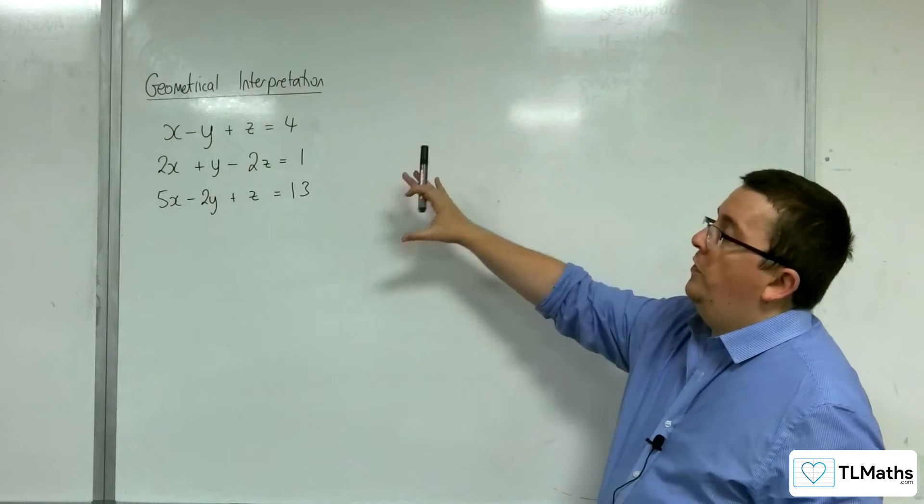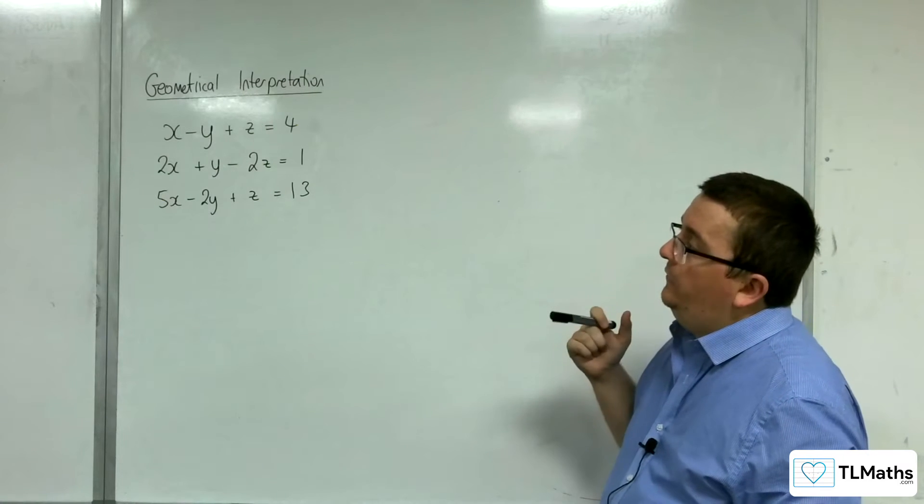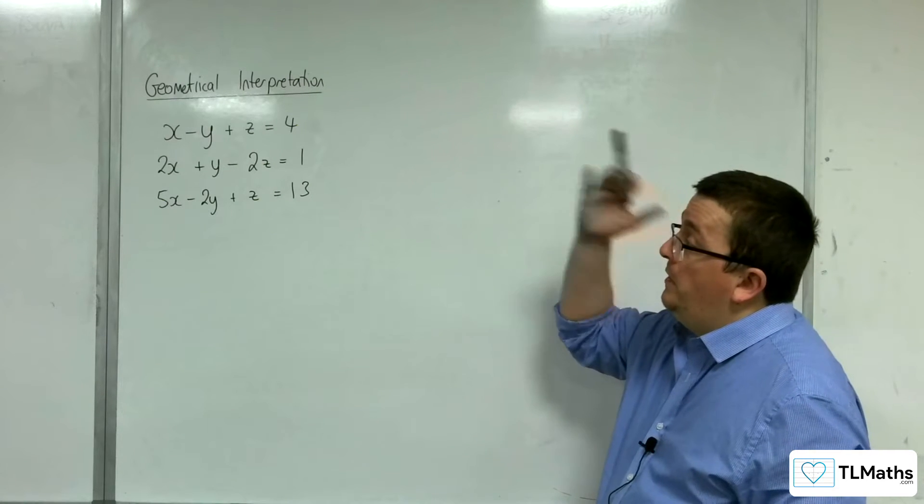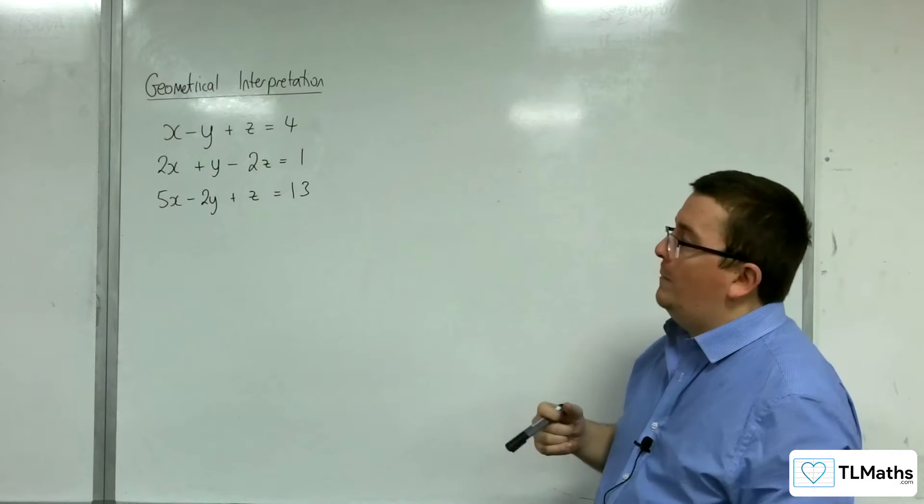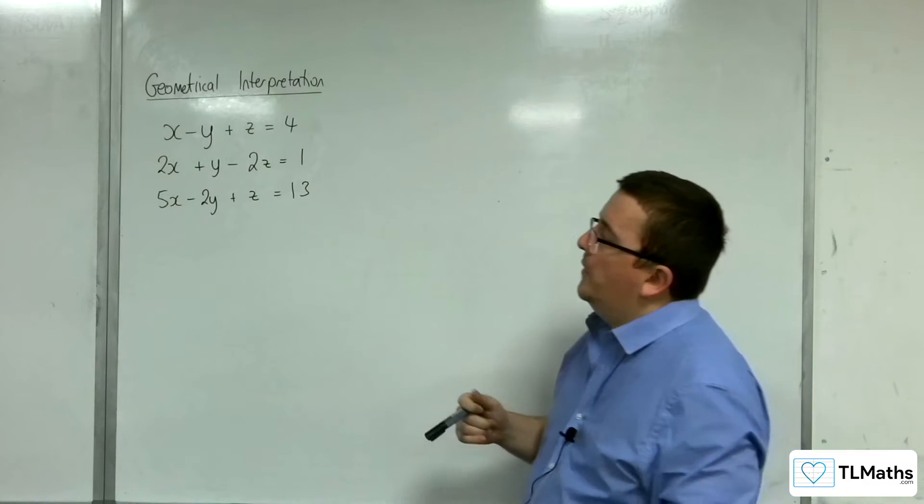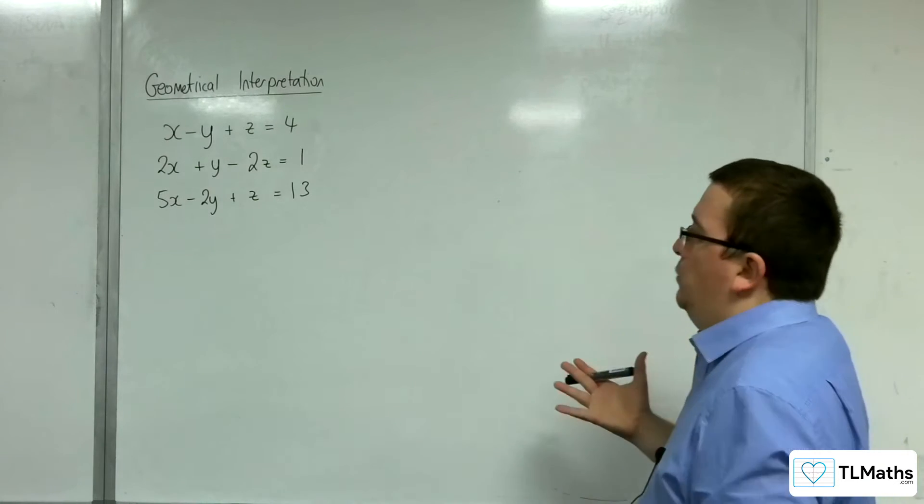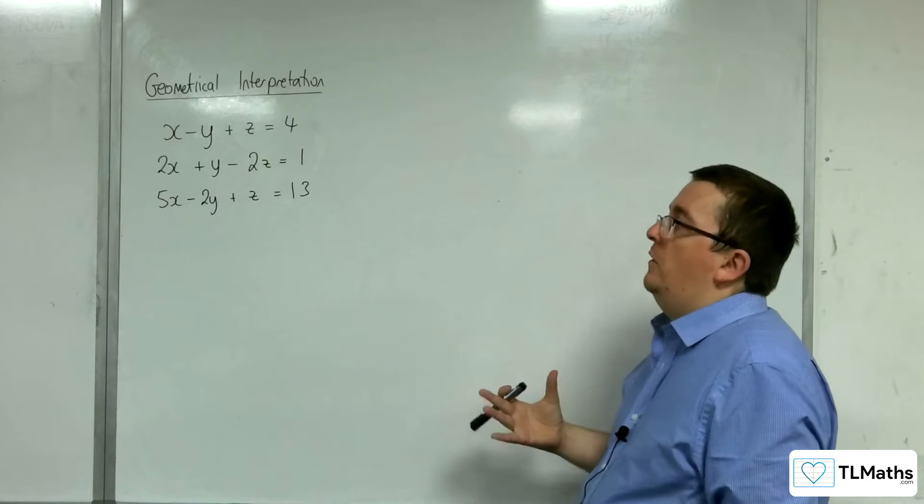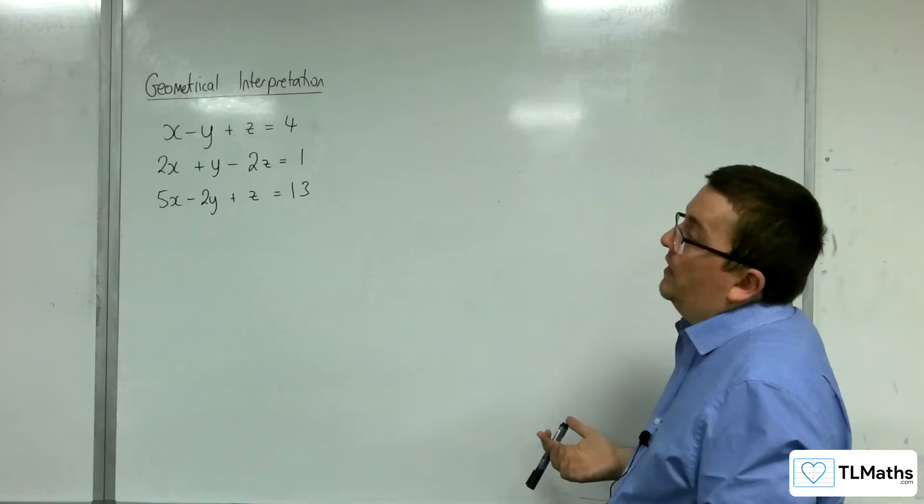So in this example, we've got these three planes, so we want to determine what situation this represents. The first thing you want to do is figure out are any of these parallel to one another.